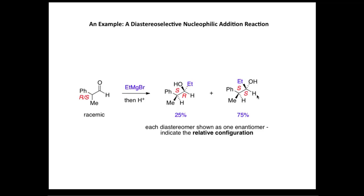We need to recognize that the other enantiomers of these compounds will be formed in the same amount — the RS enantiomer and the RR enantiomer will also be formed. When each diastereoisomer is shown as a single enantiomer, what we're indicating is the relative configuration of the product, not the absolute configuration.